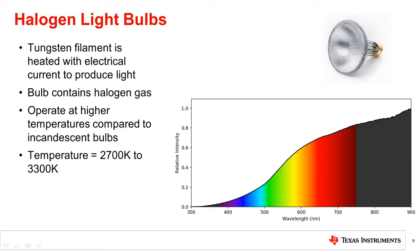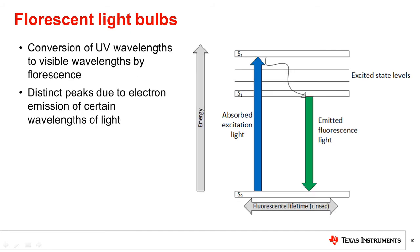Fluorescent and LED light sources operate using different processes. Fluorescence is a process by which electrons in an atom absorb a shorter wavelength of light and emit a photon of a longer wavelength of light. This is illustrated in the diagram shown.